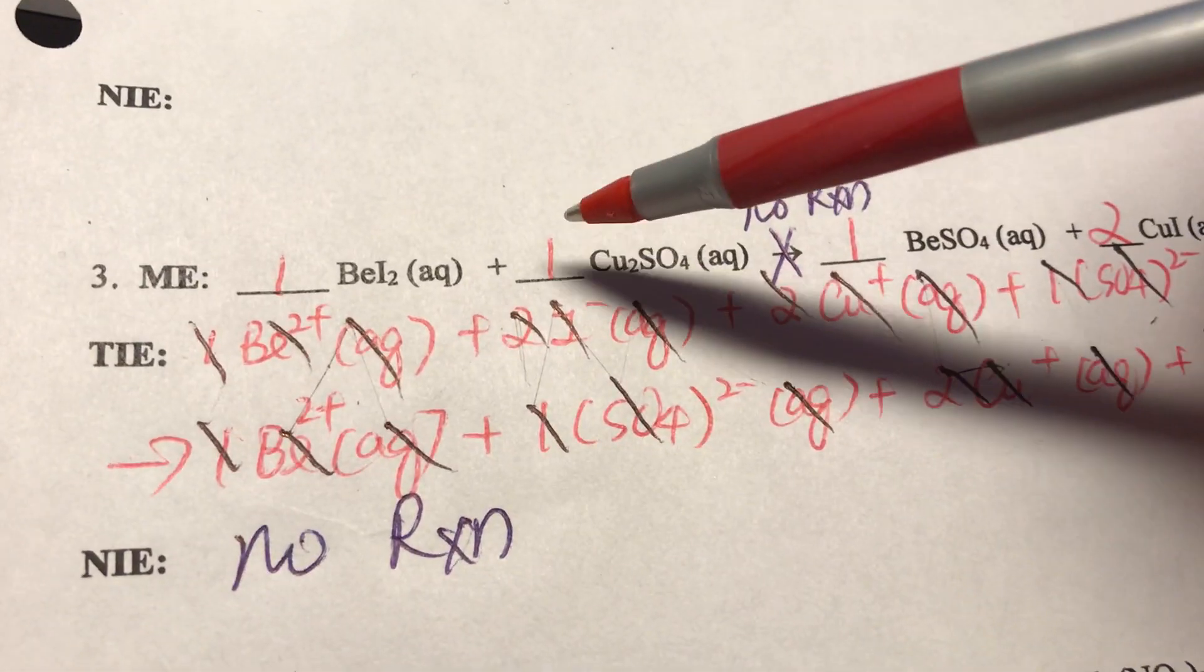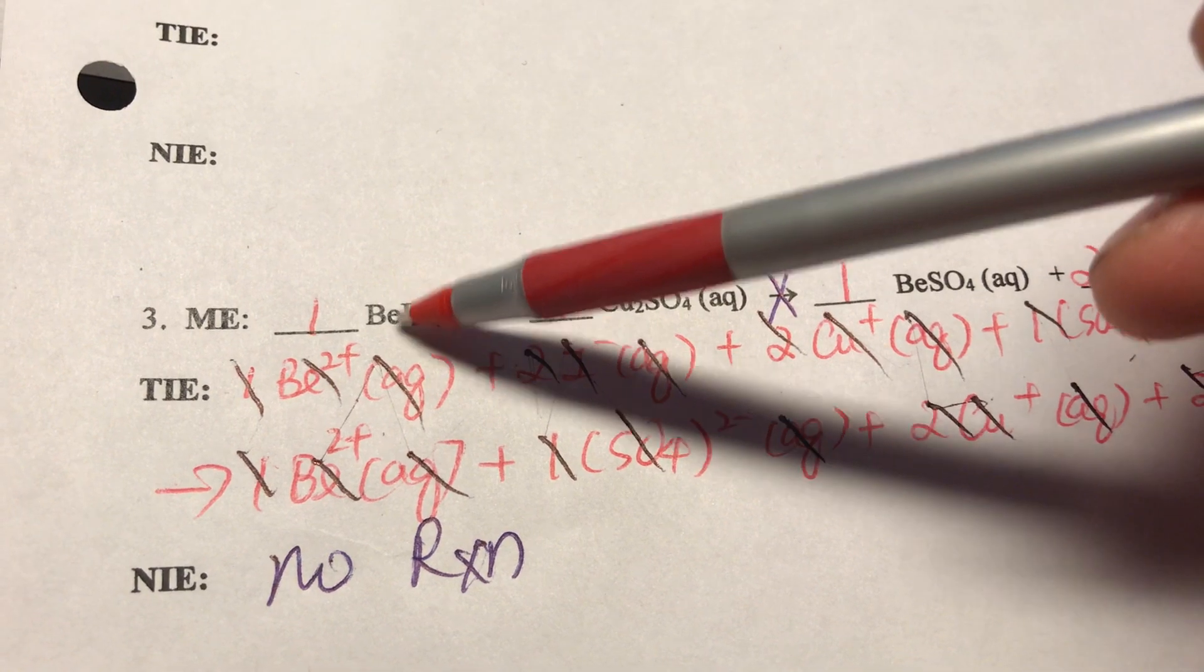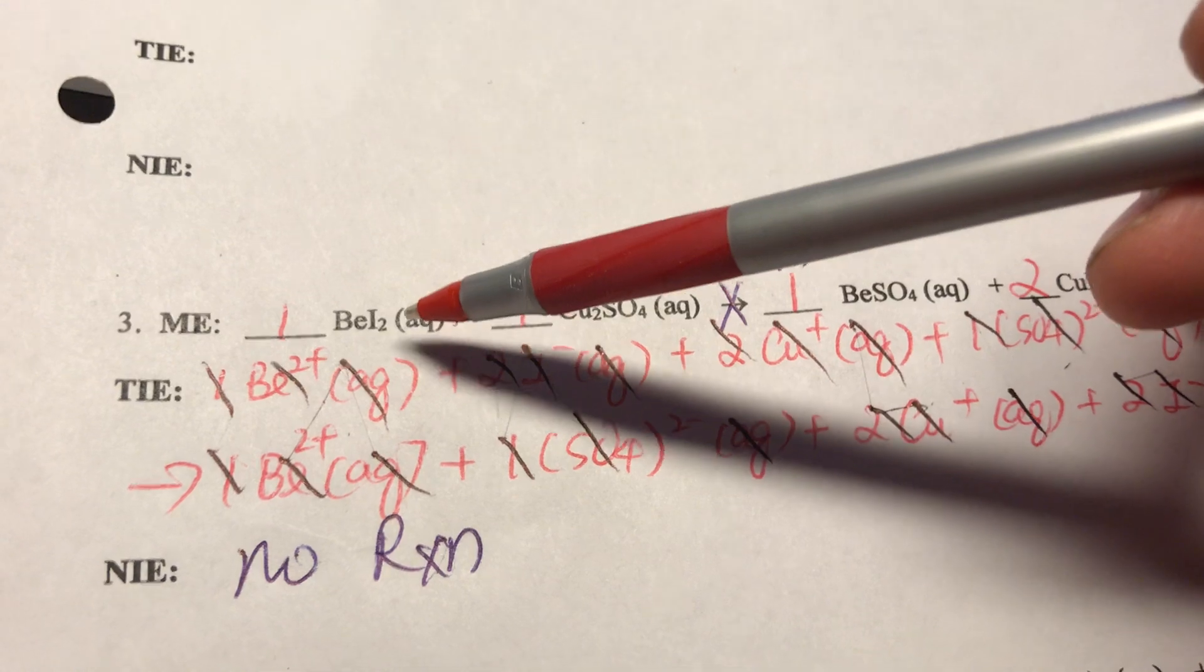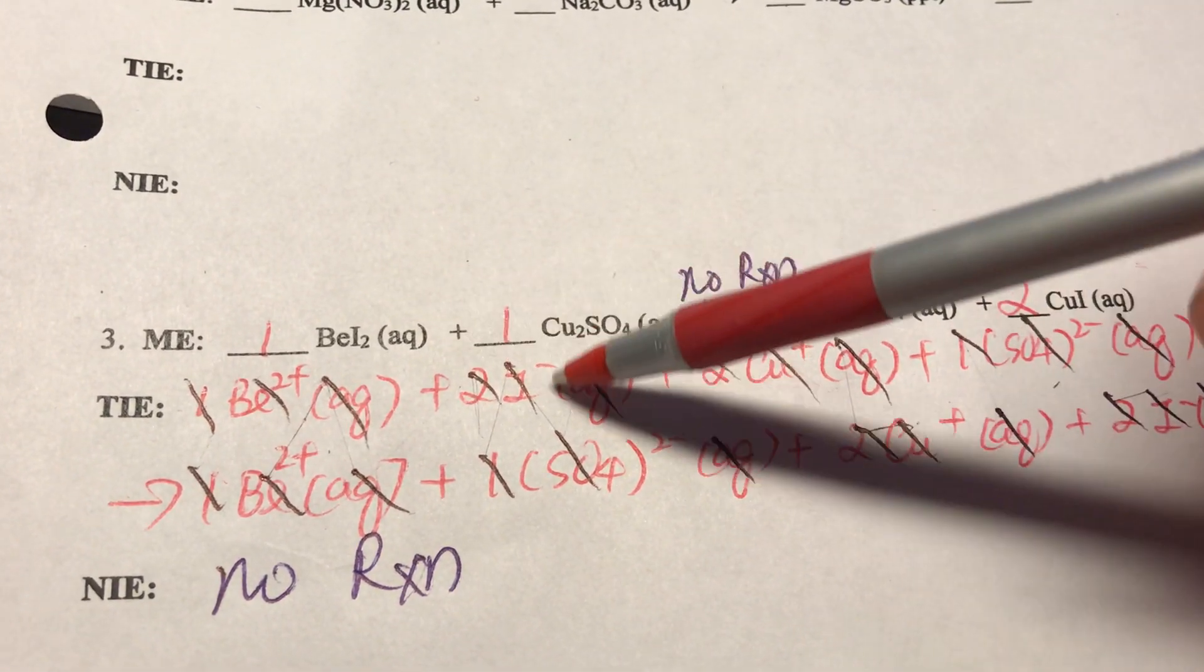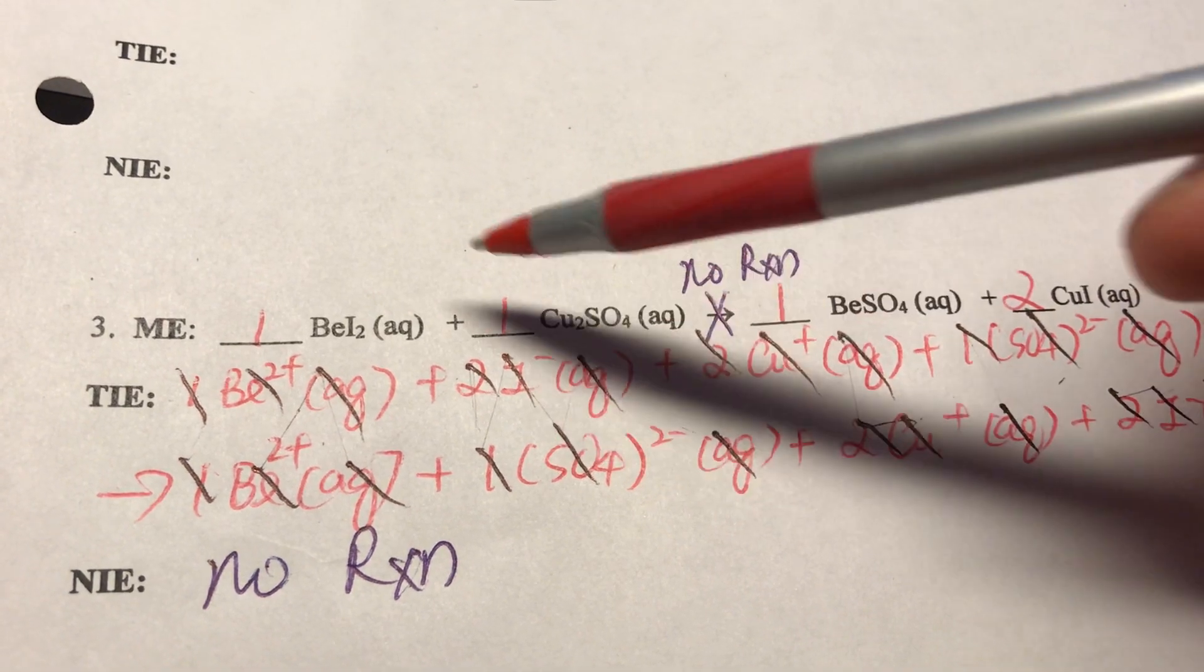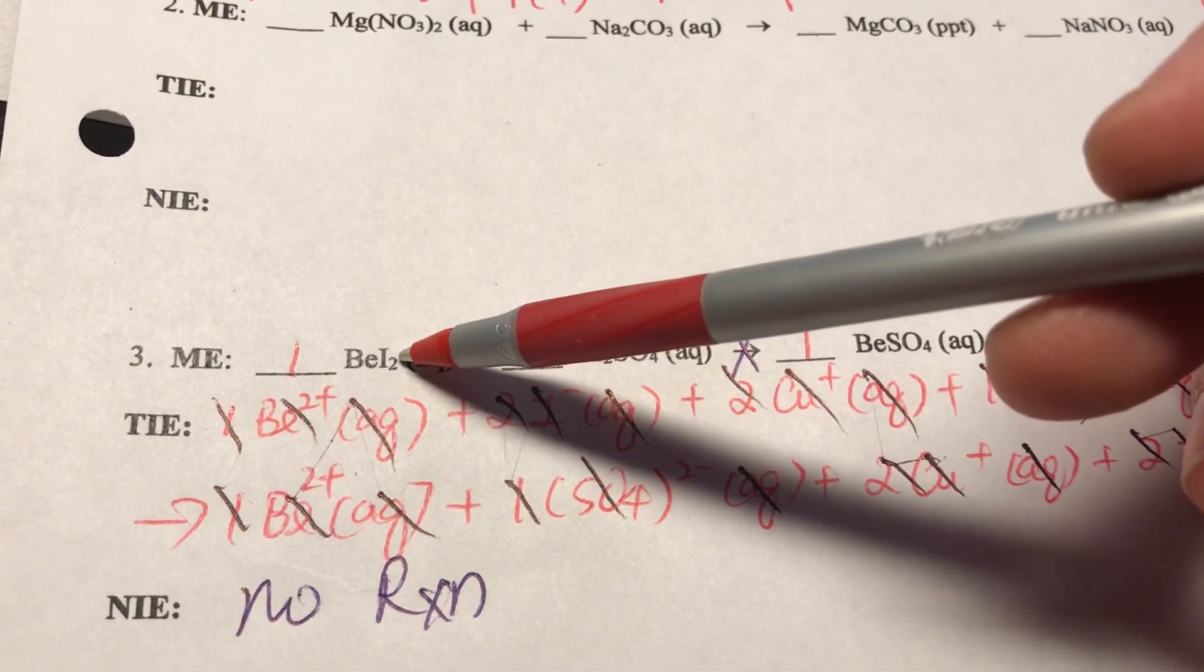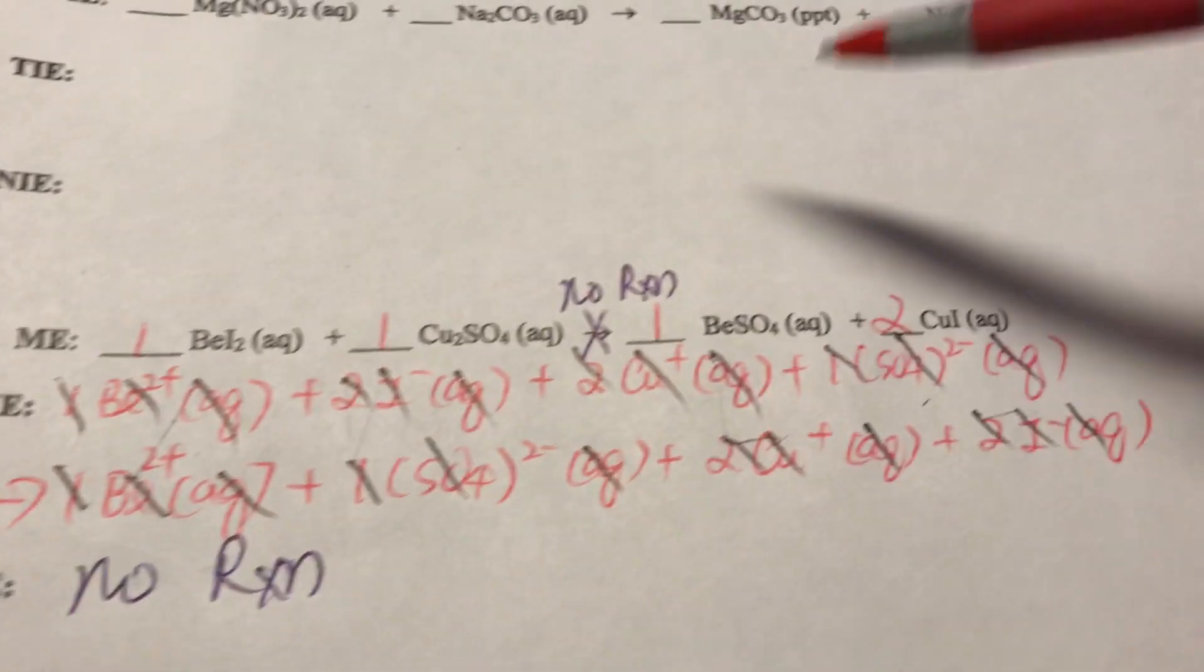So again, aq, we're going to separate it. I got 1 Be²⁺(aq). Now Be, you can either cross over or you know Be is in group 2, and I is always only I⁻. After I cross over, I have 2I here, so it would be 2I⁻(aq) plus.